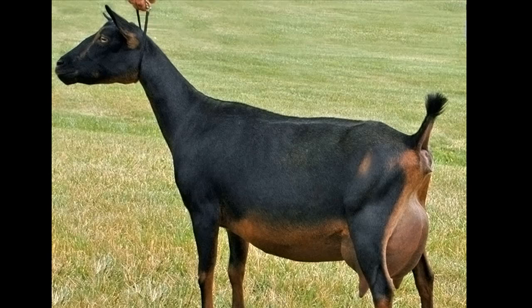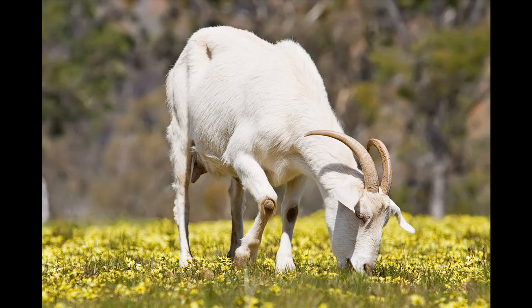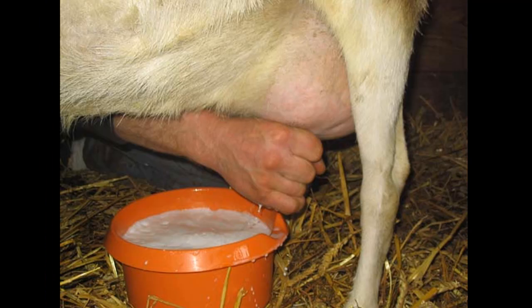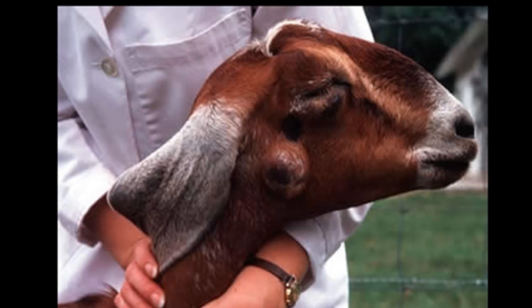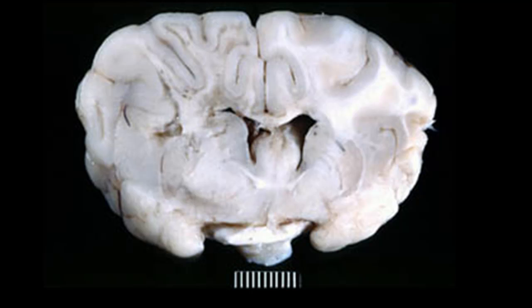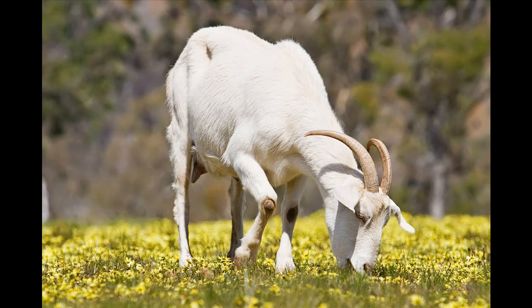Caprine arthritis encephalitis virus, or CAEV — that's a goat virus — is probably closely related to EIAV. It infects the same types of cells and has that extra gene. It's extremely prevalent: 35 to 81% of dairy goats test positive, although only 35% show clinical signs, which include autoimmune arthritis and wasting. In young kids — baby goats — it results in failure to thrive and neurological problems. It appears to be transmitted in utero or by blood-to-blood or blood-saliva contact.